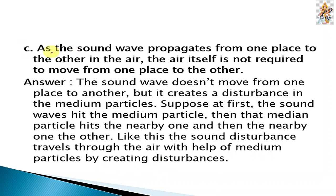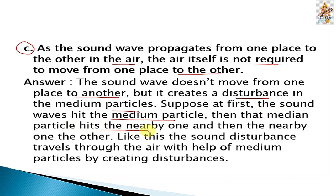C. As the sound wave propagates from one place to another in the air, the air itself does not require to move from one place to another. The reason is: the sound wave does not move from one place to another, but it creates a disturbance in medium particles. Suppose at first the sound wave hits a medium particle, then that medium particle hits the nearby one, and then the next one. Like this, the sound wave disturbance travels through the air with the help of medium particles by creating disturbances.